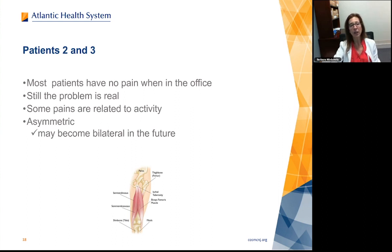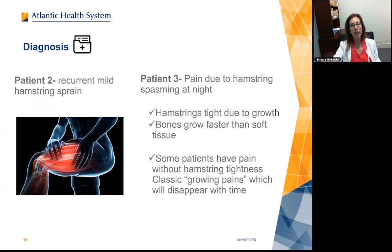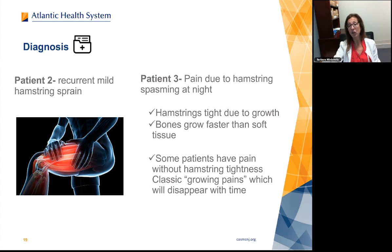Some pains are activity-related. Patient two who's limping off the field is probably pulling their hamstrings when running — likely a hamstring sprain or strain. If they have pain at the adductor tuberosity, maybe they're pulling their adductor. In any case, something to work on is making sure they're stretched out before they play. Patient three has pain probably due to hamstring spasming at night. The hamstrings are tight due to growth — bones grow faster than soft tissue — and some people are genetically tight.